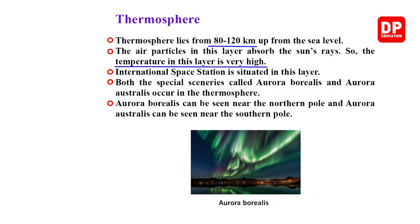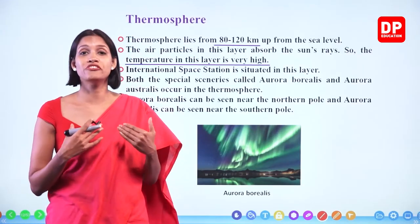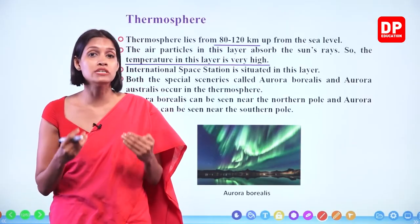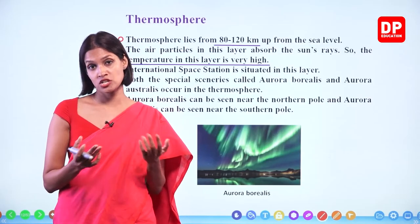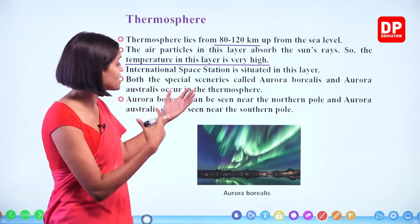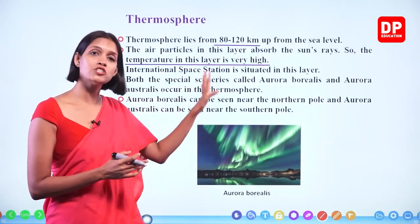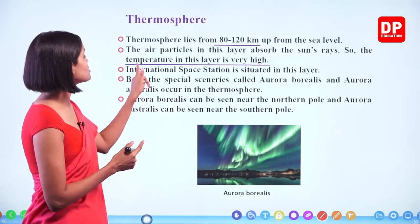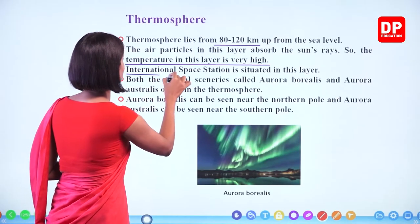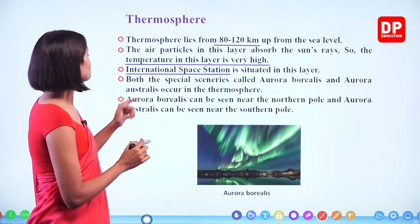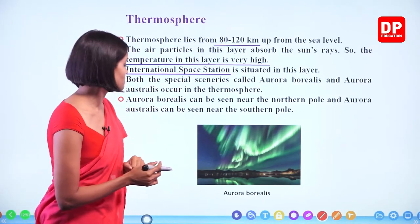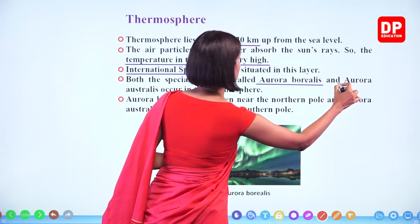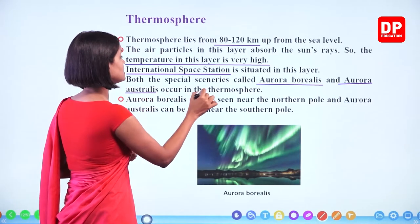Scientists live in the International Space Station and do different researches — not only about space, but also on water purity and other life sciences. A special scenery called Aurora Borealis and Aurora Australis also occurs in the thermosphere. Aurora Borealis occurs near the North Pole and is known as the Northern Lights. Aurora Australis occurs near the South Pole and is known as the Southern Lights.